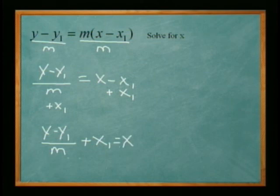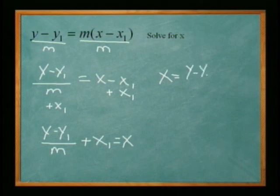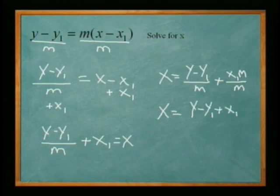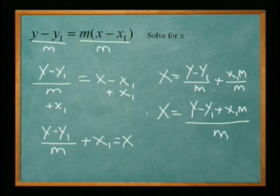Just like the last problem, we want this as a single fraction. We add x1 to both sides. With a common denominator of m, that becomes x1m over m, so putting x on the left we have x equals y minus y1 plus x1m, all divided by m. And that's how you solve literal equations — you multiply, divide, add, and subtract just like regular equations, even though you're working with variables instead of numbers.